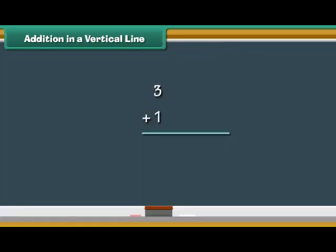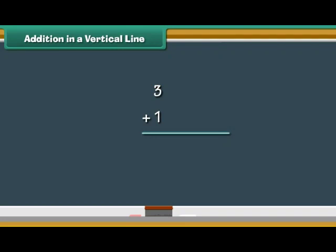What is three plus one? Write the two numbers one below the other. Draw three vertical lines next to three and one vertical line next to one. Count the vertical lines: one, two, three, four. Three plus one is four.